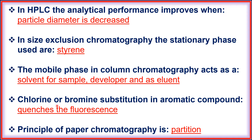Chlorine or bromine substitution in aromatic compounds quenches the fluorescence. The principle of paper chromatography is partition.